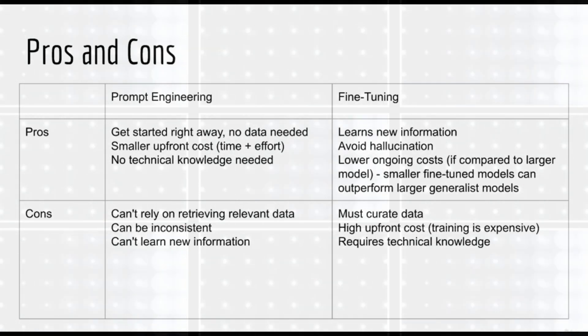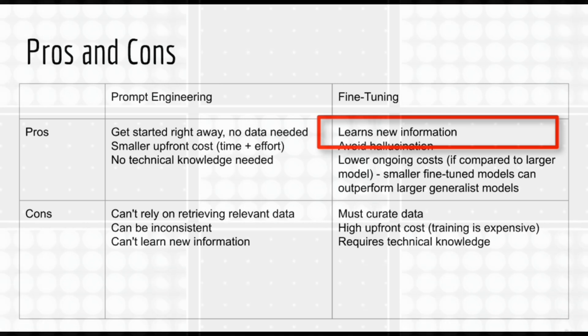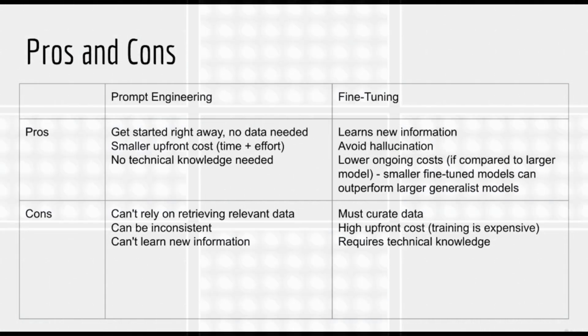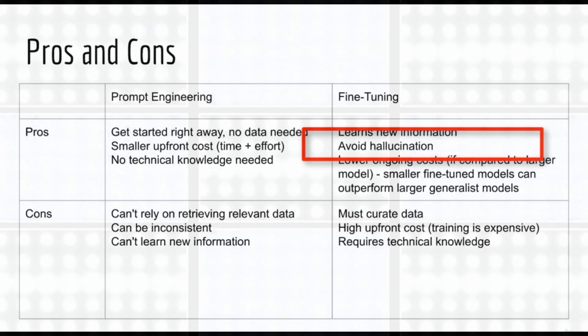Now let's move on to the pros of fine-tuning. In contrast, fine-tuning does allow the model to learn new information. Simply use that information during the training process. Training can also help to prevent hallucination in certain niche areas. We discussed that the model might hallucinate if you ask it something it doesn't know the answer to. But with training, the model can become better and more knowledgeable about the data you use to train it with.